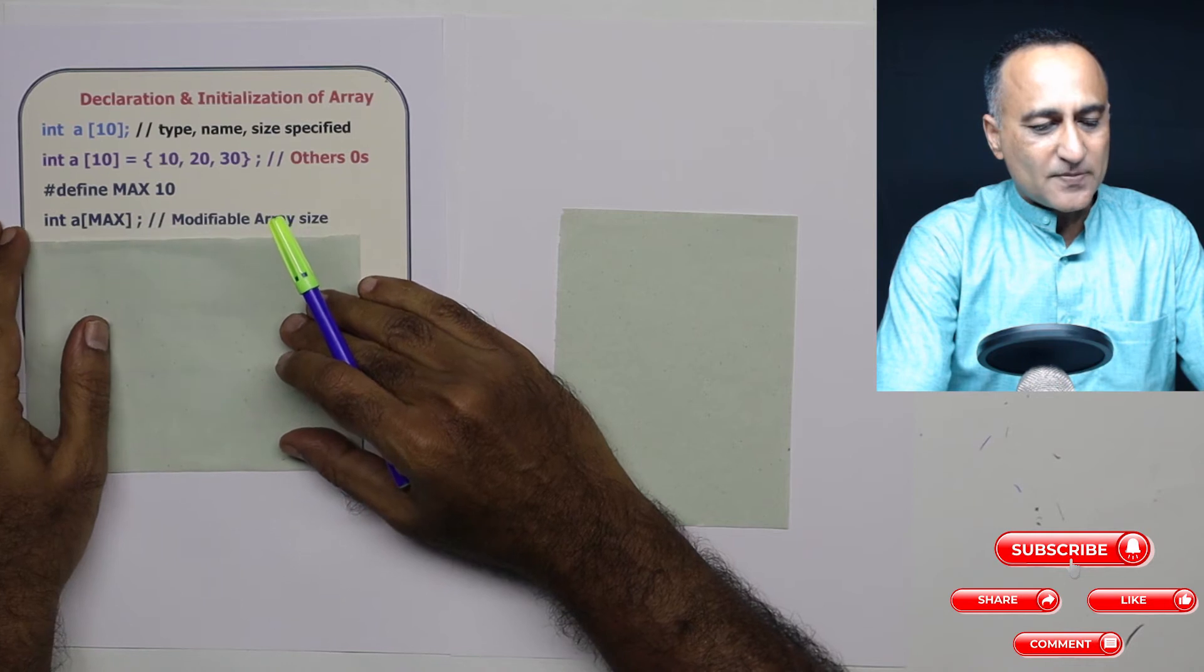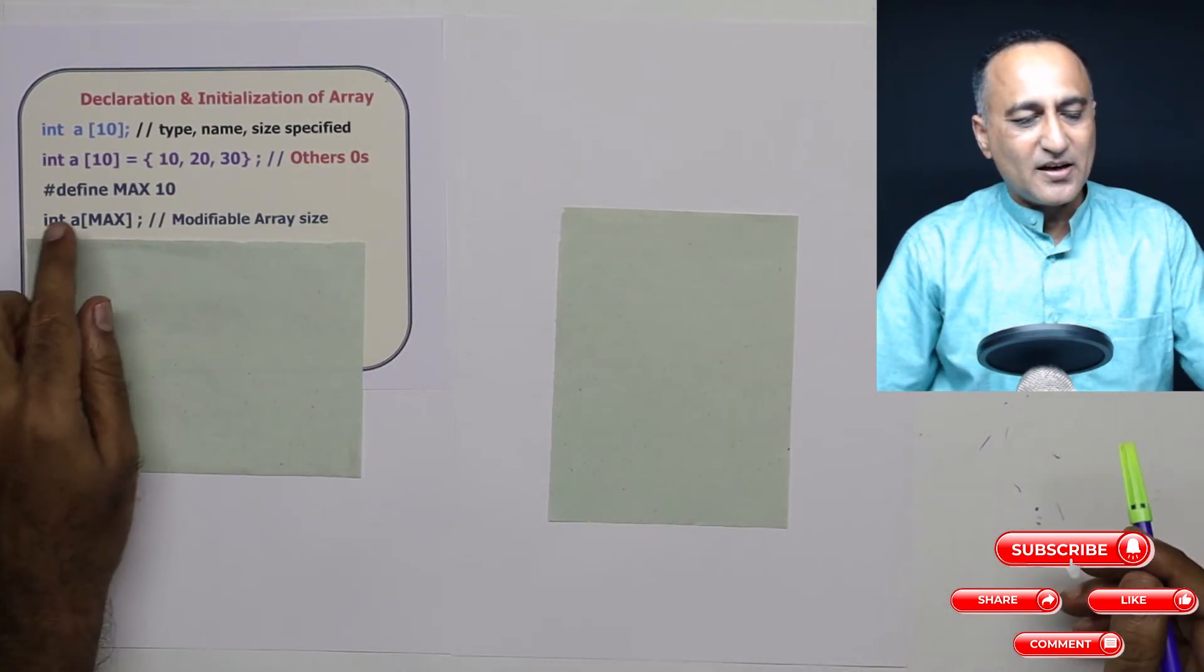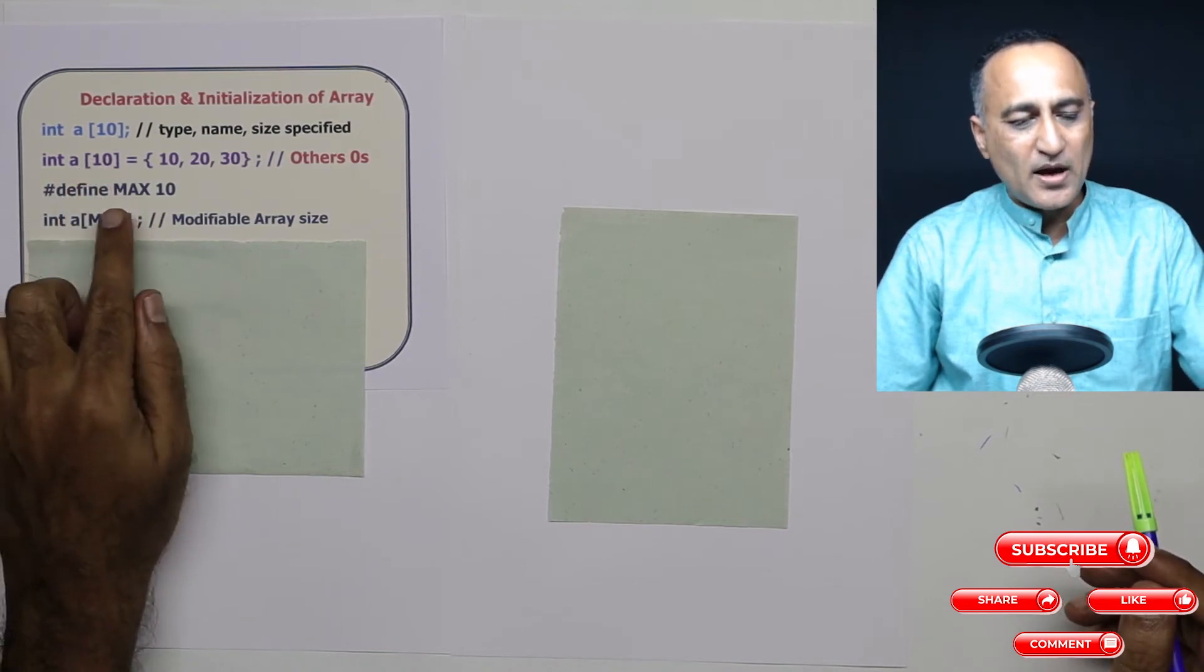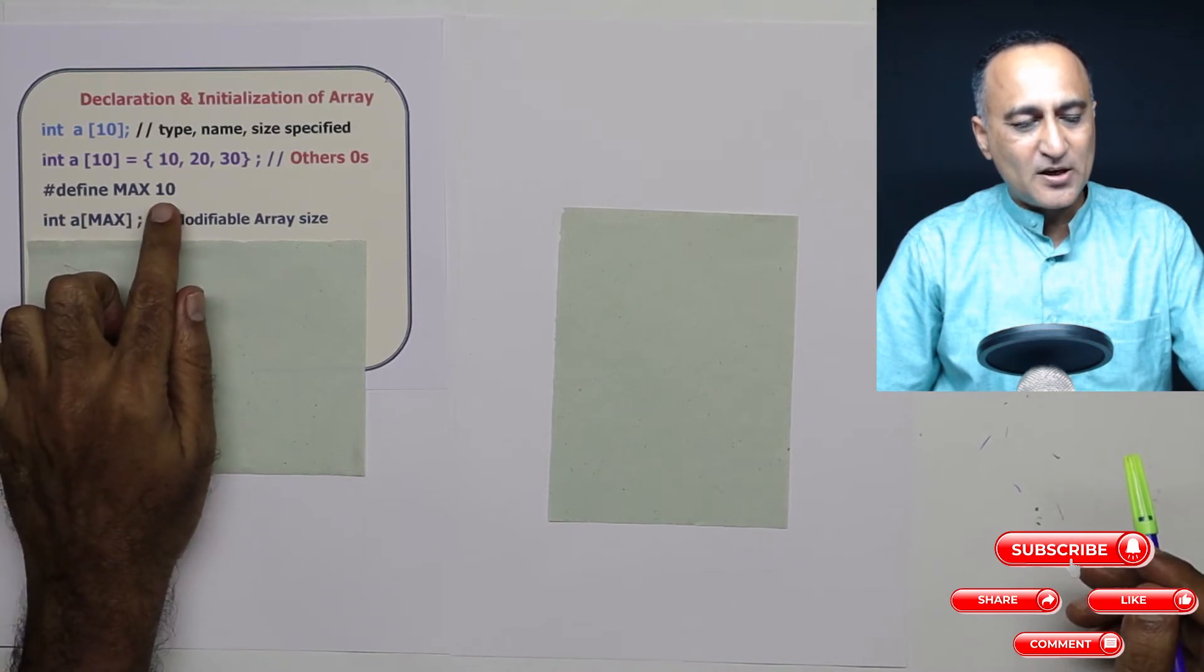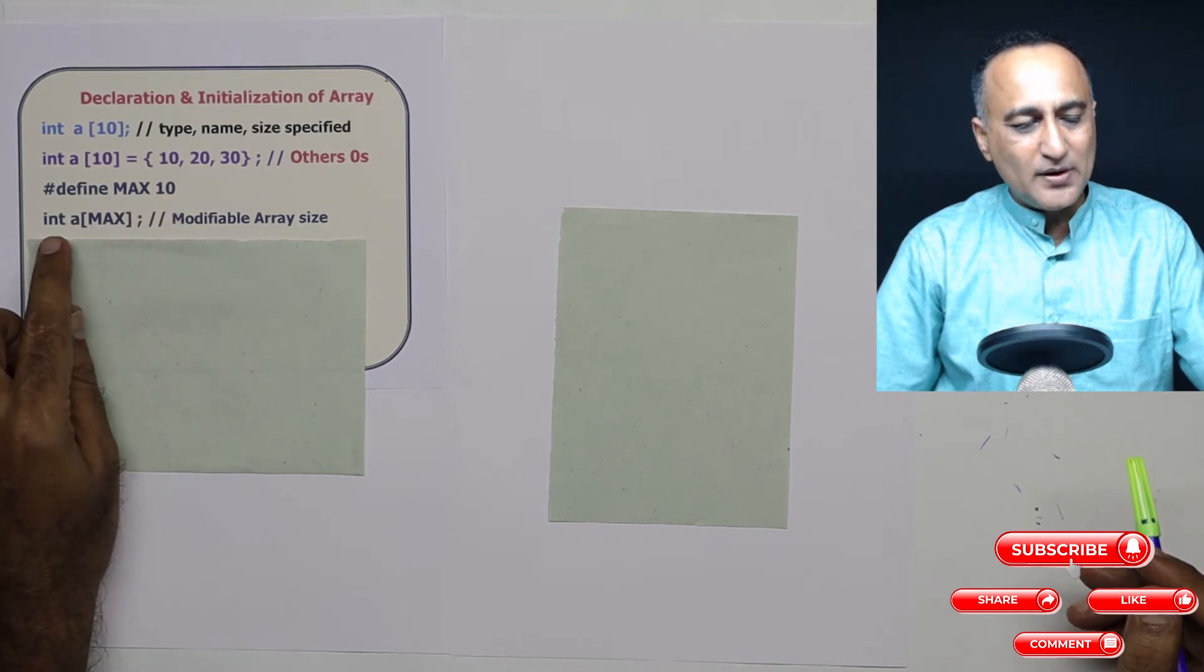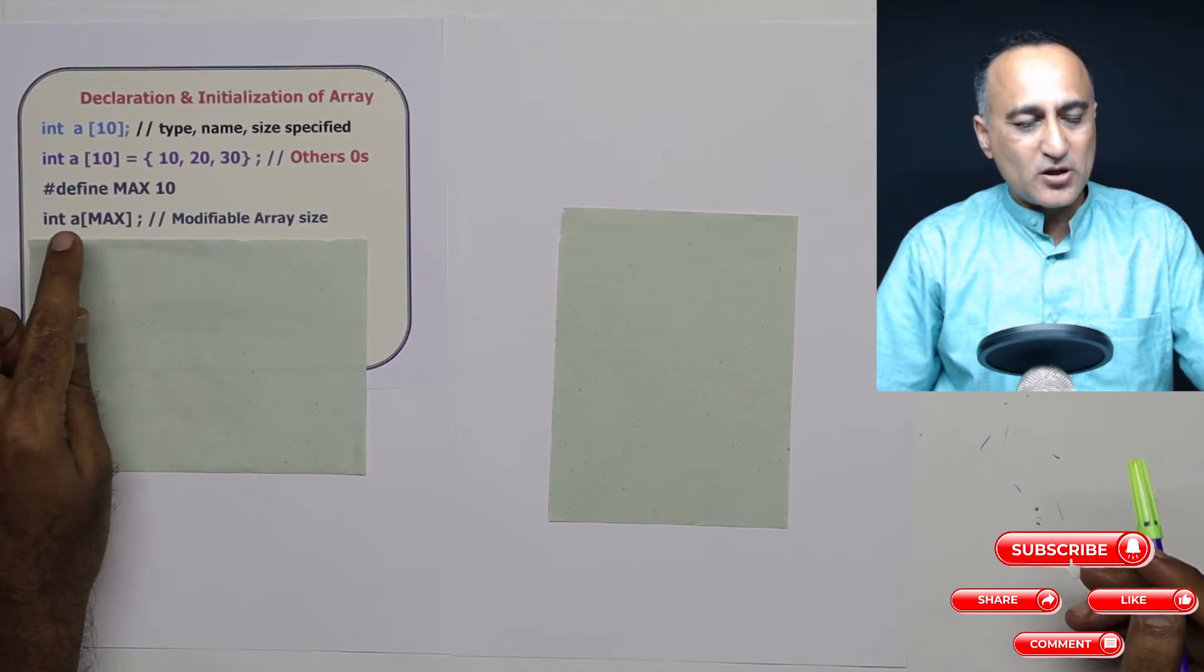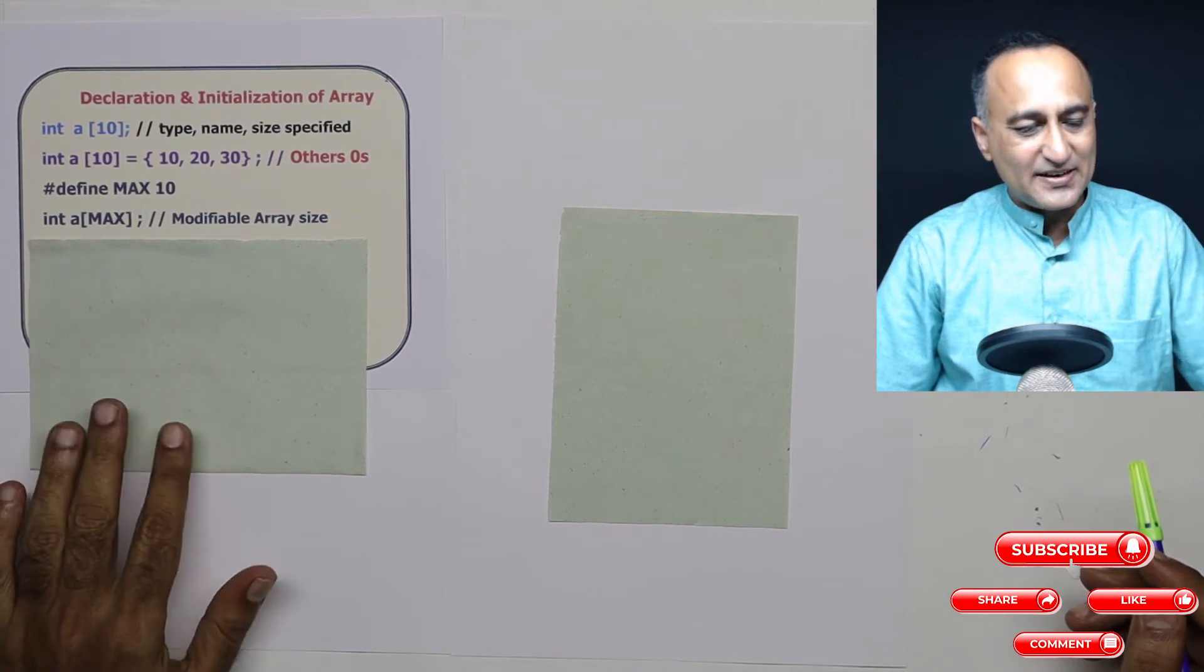Now suppose I want to keep the size of the array controlled through a hash define instead of giving a constant value. I can say hash define MAX of 10. So if I make MAX 20 and next time I just have to recompile it, then the new value of the array size is going to take place. So here, based on the value of MAX, the size of the array is determined.